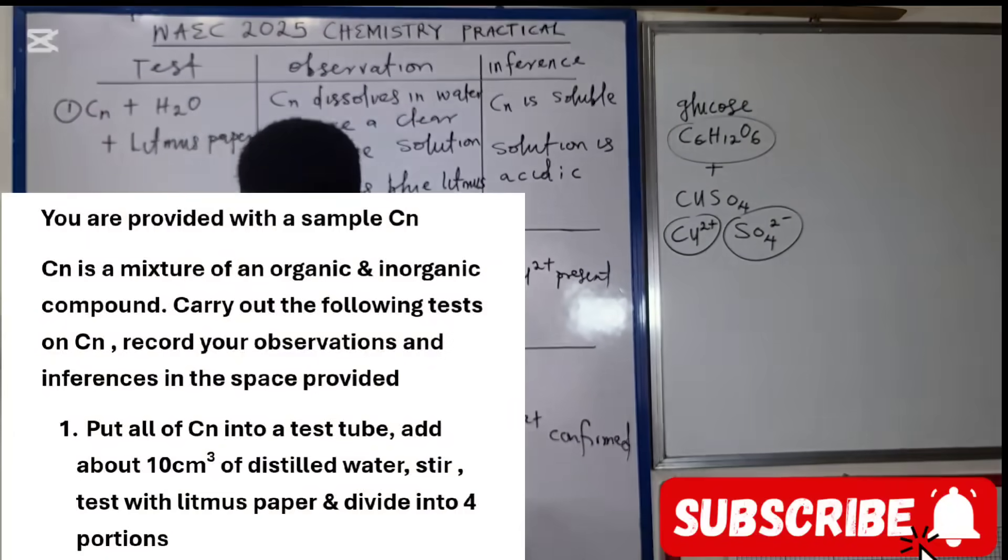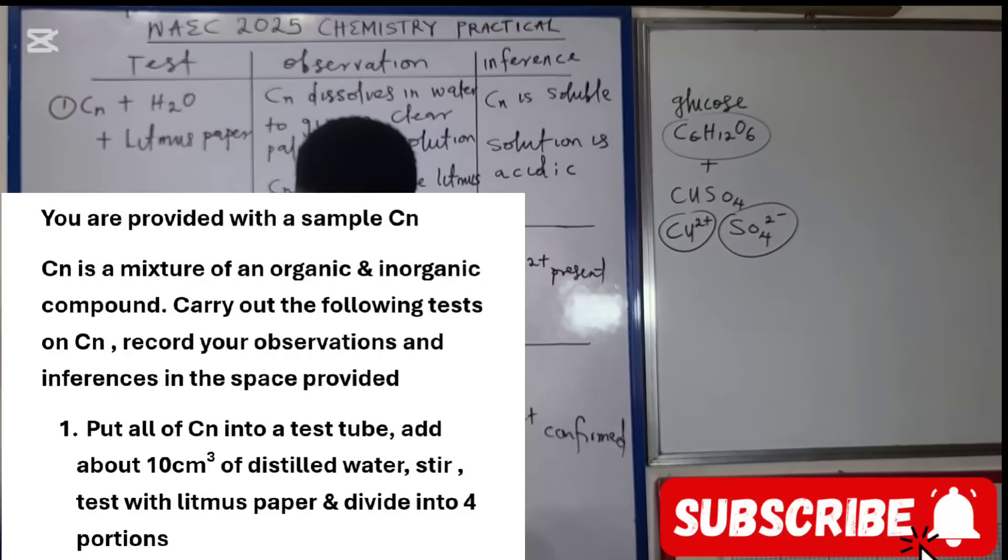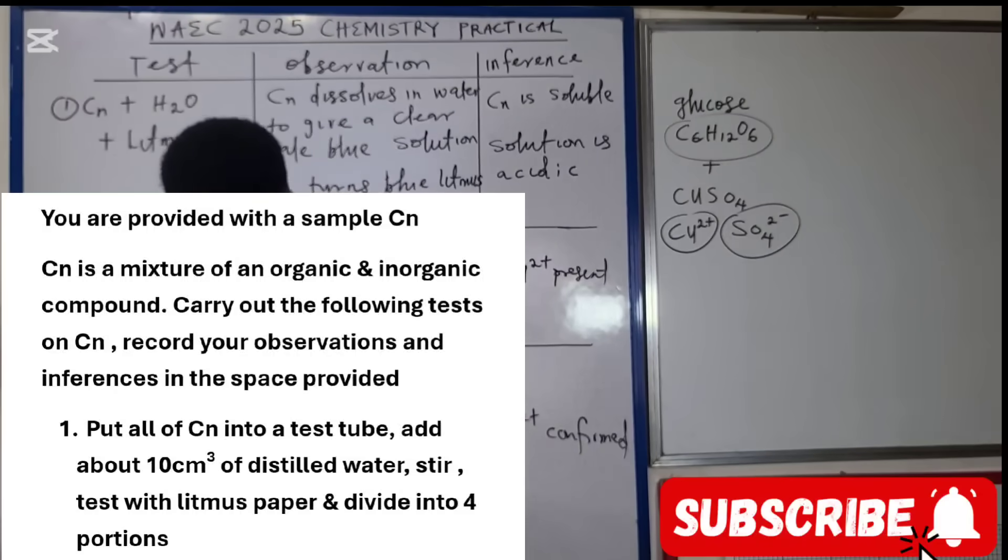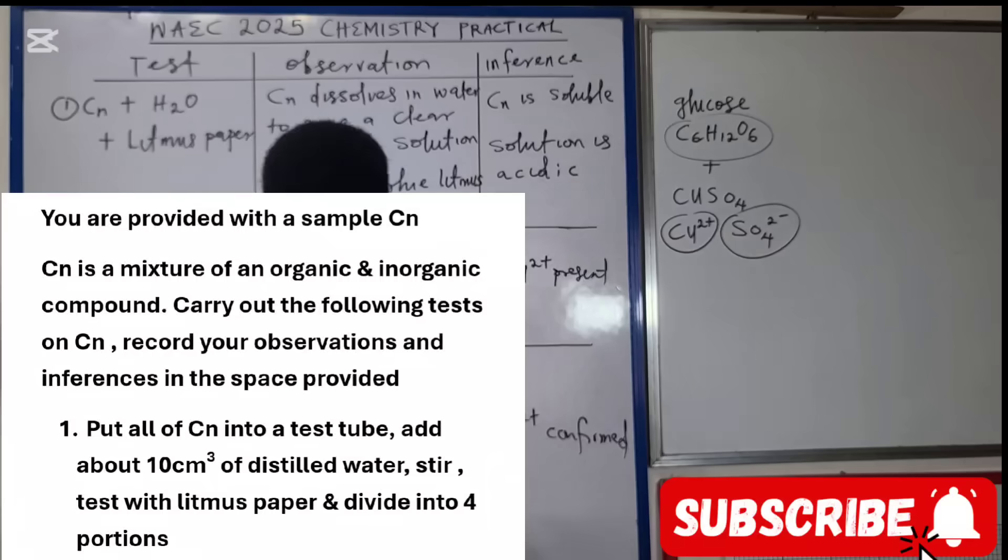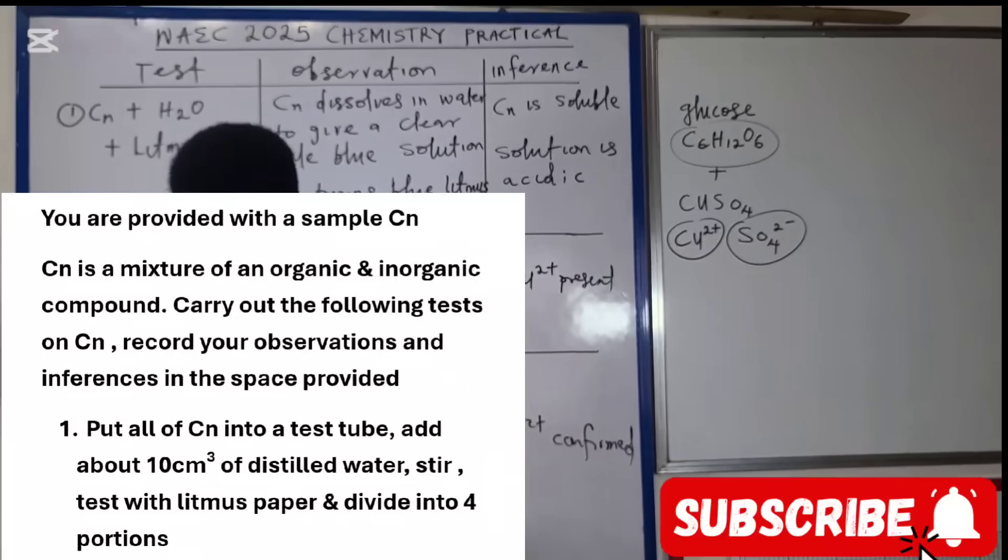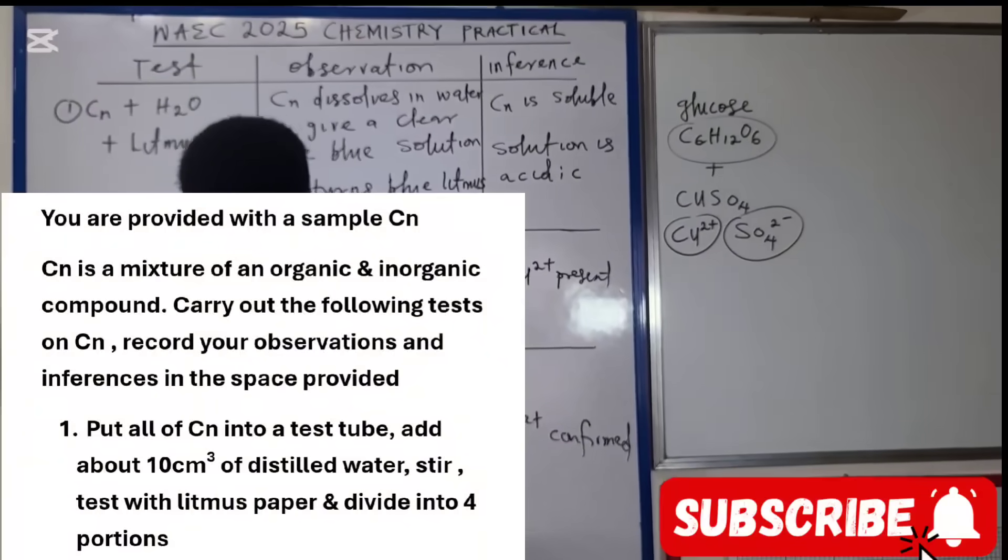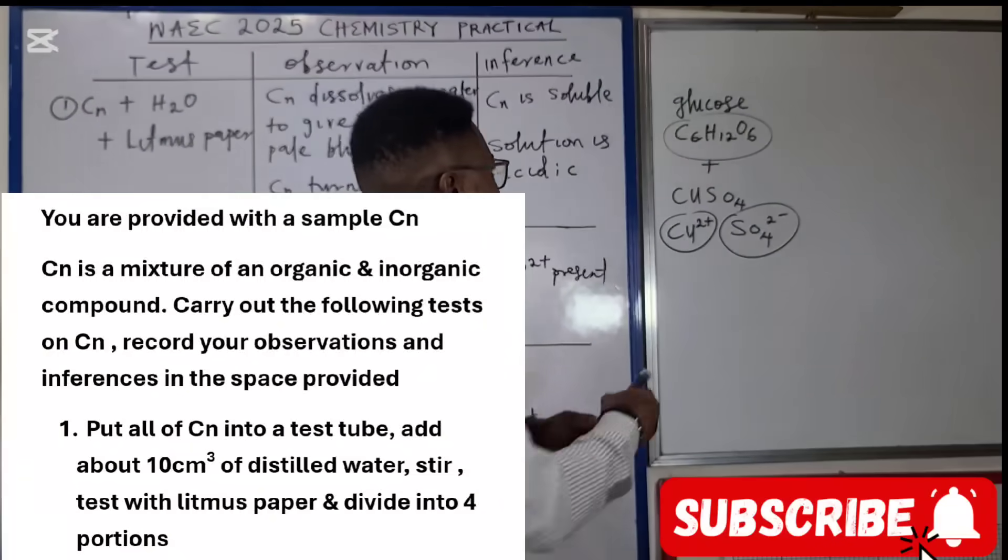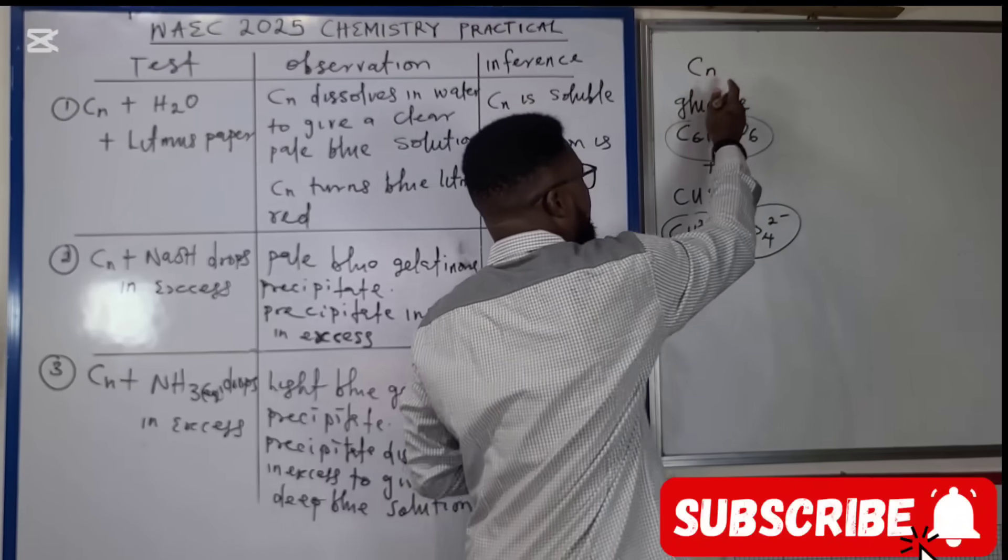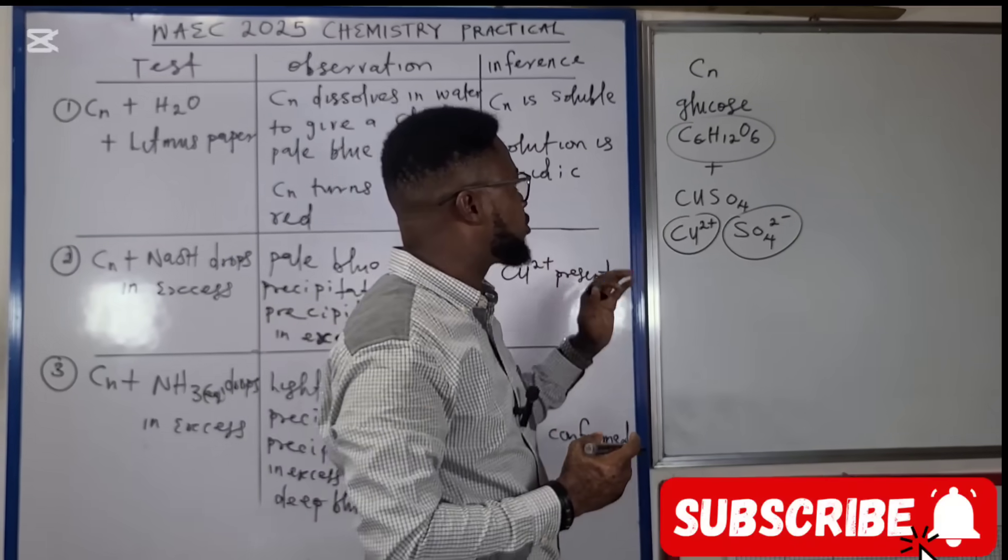Test 1: Put all of CN into a test tube and add about 10 cm³ of distilled water, test with litmus paper, and divide into four portions. Because CN is a mixture of glucose and copper sulfate, both are soluble salts.